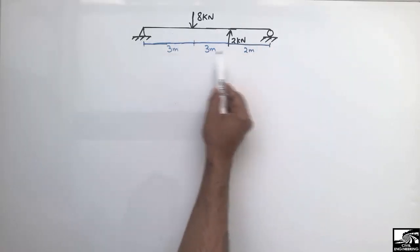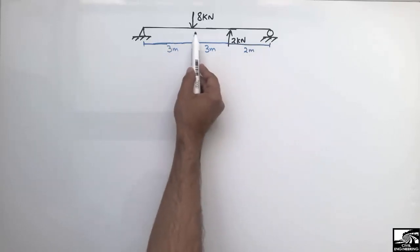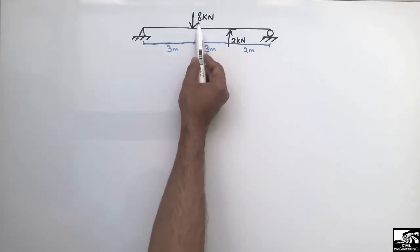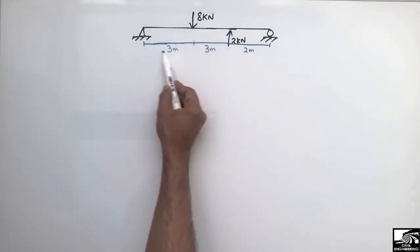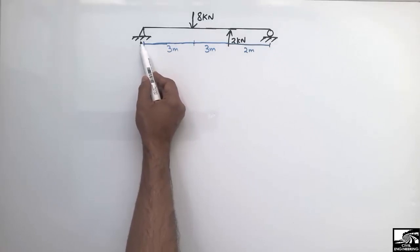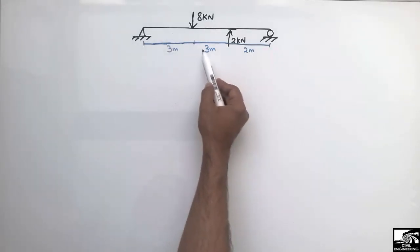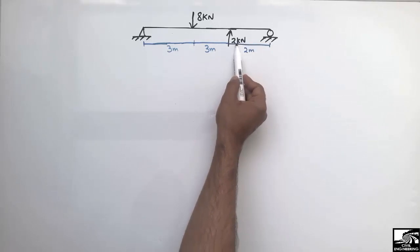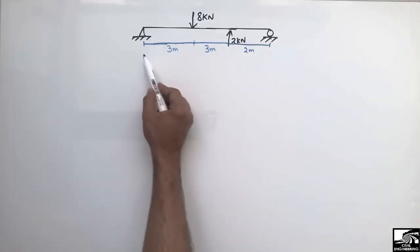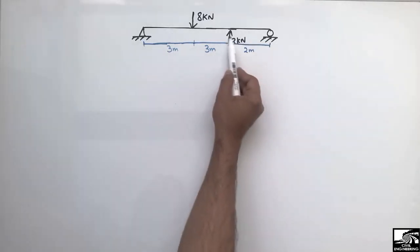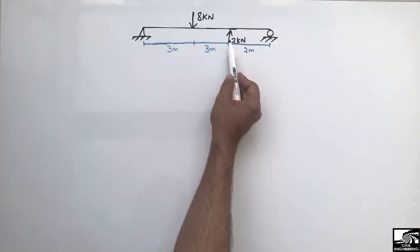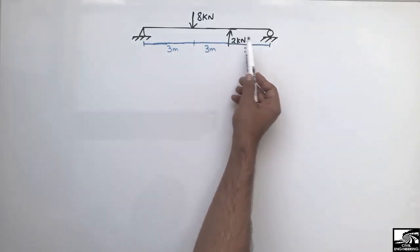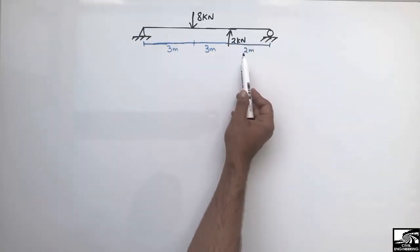This is a simply supported beam with a total length of 8 meters. There are two concentrated loads acting on this beam. The first concentrated load is 8 kN acting at a distance of 3 meters from the left end. After this 3 meters, there is another load of 2 kN at a distance of 6 meters from the left end, and this load is acting in the opposite direction to that of the 8 kN.